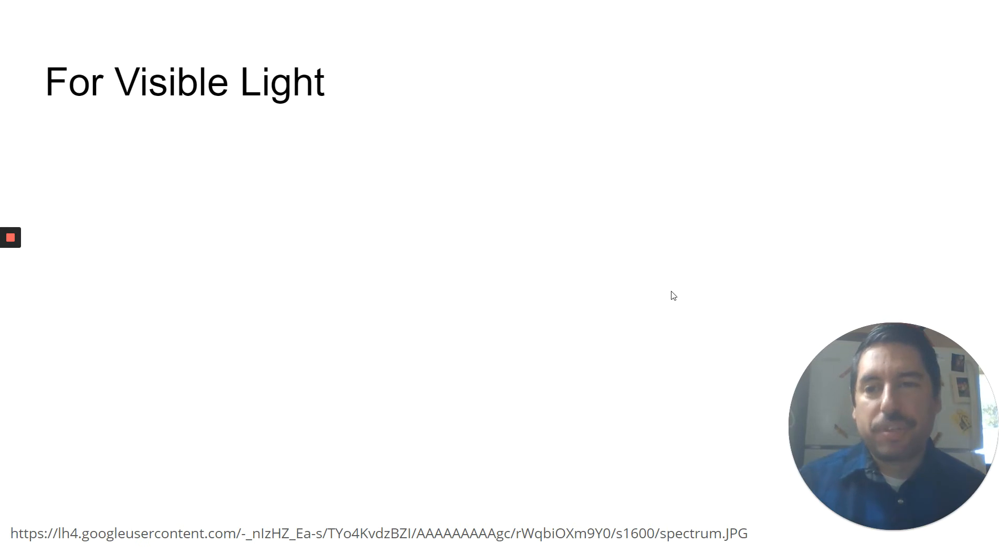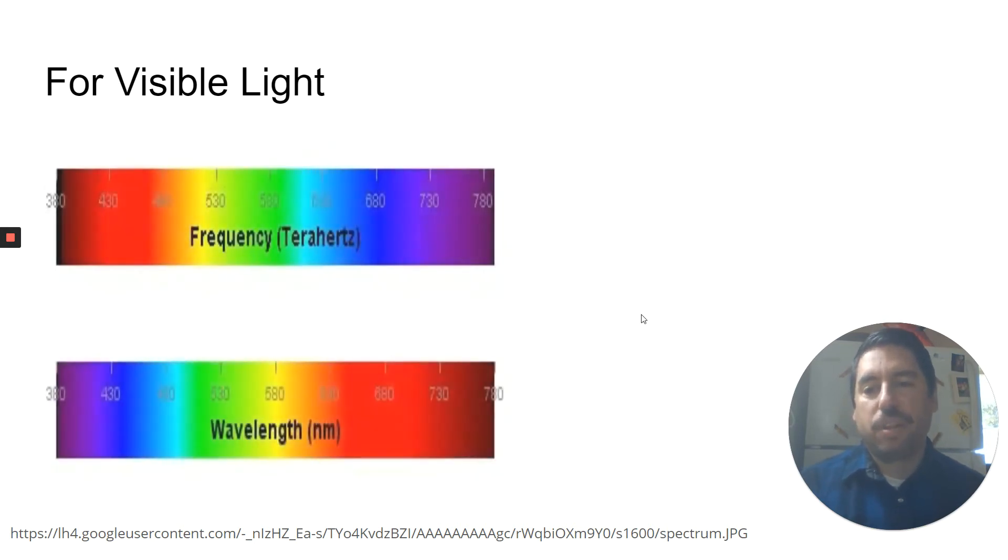So it doesn't just happen with sound waves. It also happens with visible light. And we said before that light, the light that we see, each color has a different frequency. So you can see red has a frequency of about 380 kilohertz. And then as we go to orange and yellow, the frequency is changing.